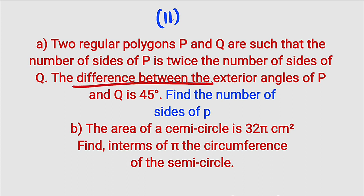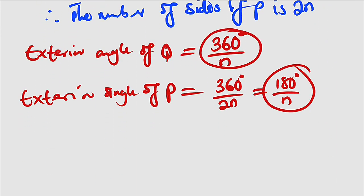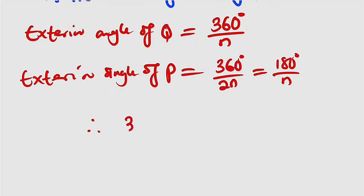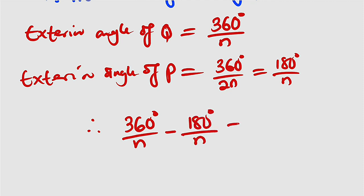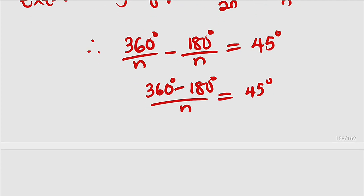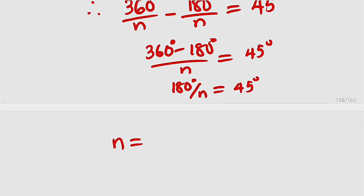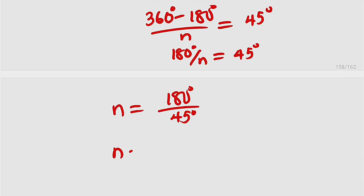It is stated that the difference between the exterior angles of P and Q is 45 degrees. So if we subtract: 360 degrees divided by n minus 180 degrees divided by n equals 45 degrees. We have common denominators, so 360 minus 180 is 180 divided by n equals 45. Making n the subject, n equals 180 divided by 45, which equals 4. Hence n is equal to 4.